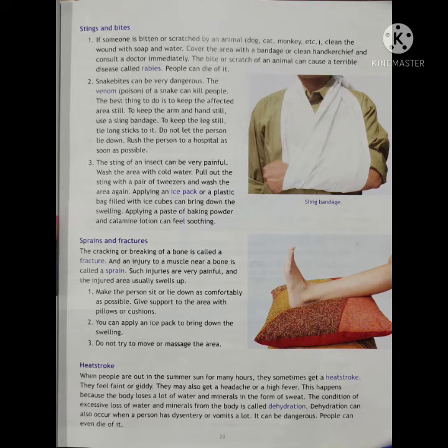Agar animal ka dank ya scratch ho jaye, inse bahut khatarnak rog hota hai, jise rabies kehte hain. Inse ye disease aisa hai, jinse insaan mar bhi sakta hai. Snake bites can be very dangerous. Saap ka dank, saap kaatne se bahut, ye bahut bura hota hai. The venom, poison of a snake can kill person. Jo snake ka poison hota hai, wo insaan ko maar deta hai.